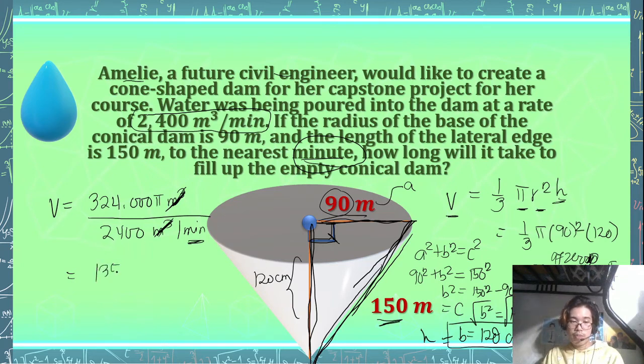So 135 π minutes. Or if we're going to use decimal on that, so that should give us 424, 424.12 minutes. And if we really want to be exact or precise on that, we can subtract 424 from 424.12.